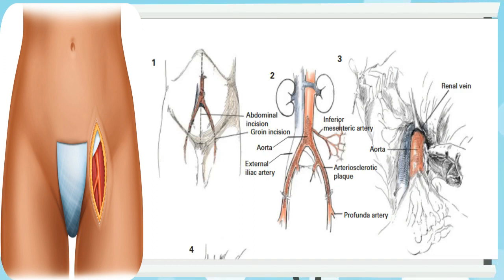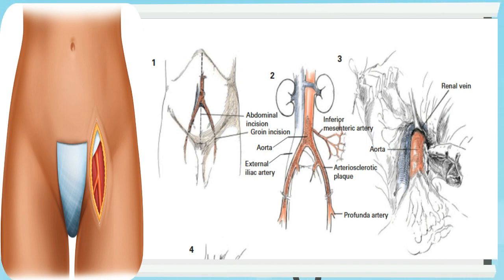Only patients with severe and debilitating occlusive disease of the aortoiliac segment should be considered for surgery. These patients will have claudication that is progressing or disabling. Patients with rest pain, ulceration, or gangrene who fall in the limb salvage group may require surgery to preserve limb function. These patients are generally elderly and have associated generalized arteriosclerosis with a high incidence of coronary disease and hypertension.